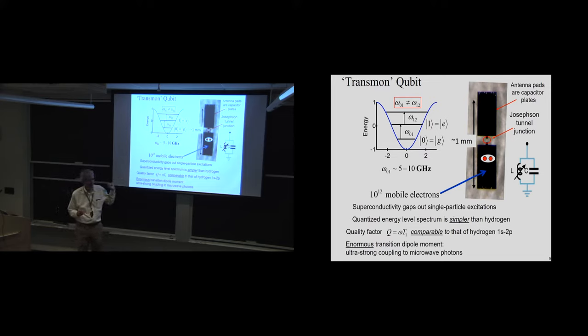So here is what we call a transmon qubit, just the world's simplest one, it's the one that everybody has adopted after it was developed by Rob Schoelkopf. There's a sapphire substrate, there's a little millimeter dipole antenna and the two halves are connected by a Josephson junction. And the excitations of this qubit are supercurrents sloshing back and forth across the antenna pads. The superconductivity gaps out all the single particle excitations in the Fermi sea of those trillion electrons and simplifies the spectrum. The quantized energy level spectrum is that of an anharmonic oscillator, it's simpler than hydrogen. There's no fine structure, no hyperfine structure, and the quality factor, the transition frequency times the spontaneous emission lifetime is about the same as a hydrogen 2p to 1s transition.